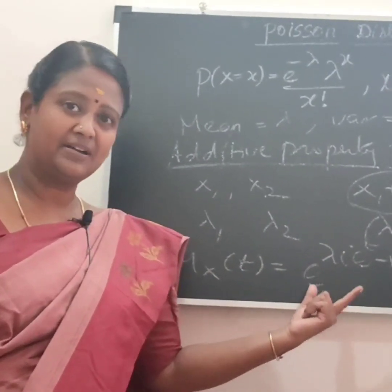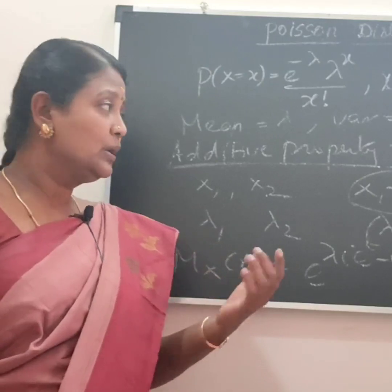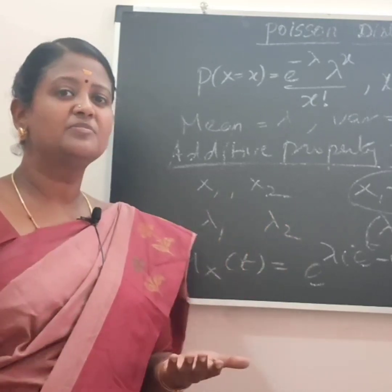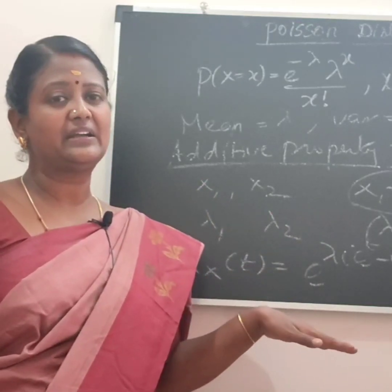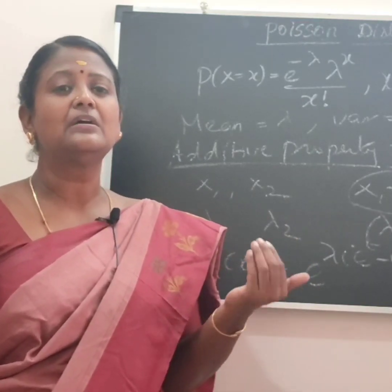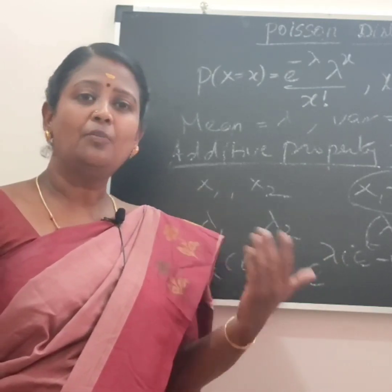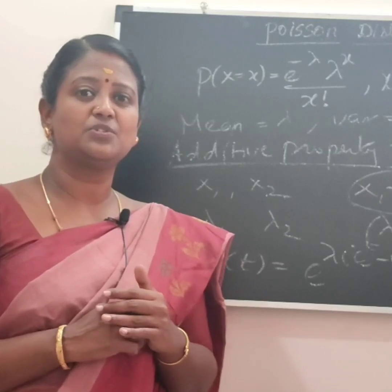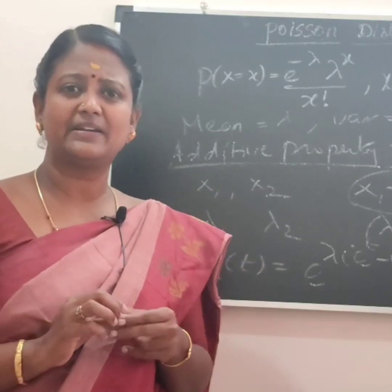If you want to derive the mean and variance, the process is very simple once you evaluate using the MGF. In question papers, you may need to derive mean and variance using the Binomial or Poisson distribution. It is a very simple distribution, and we will solve problems in two simple categories.